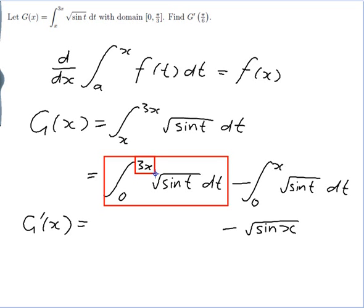All of this stuff here, that's just a function. And I know what the derivative of that function is. The derivative of that function is the square root of sin x. Only I haven't got x, I've got 3x. So now I've done the derivative of the outside. The derivative of the inside is the derivative of 3x, which is 3.